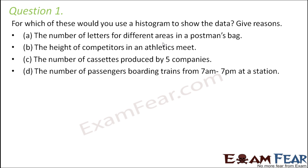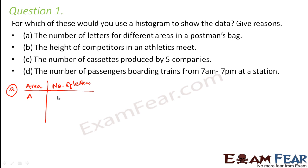First scenario: the number of letters for different areas in a postman's bag. In this case, the frequency distribution table would list areas and the number of letters — area A has 10, area B has 5, area C has 23, and so on. There is no grouping here, so this cannot be represented by a histogram.